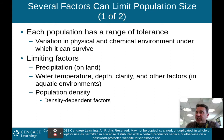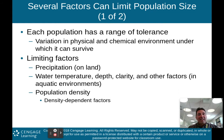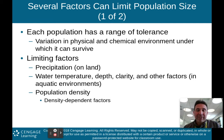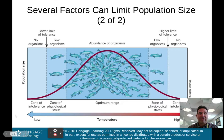Several factors can limit population size. Each population has a range of tolerance — the variation in the physical and chemical environment under which it can survive. Limiting factors include precipitation on land: we don't get many organisms in the desert but lots in tropical rainforests, so more water usually means more organisms. In aquatic environments, temperature, depth, clarity, dissolved oxygen, and population density are also limiting factors. Dense populations are more susceptible to disease spreading than widely dispersed ones.